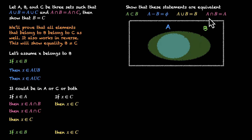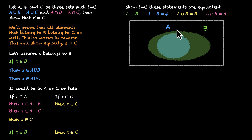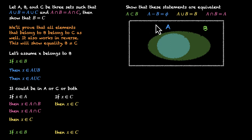The last statement says A intersection B equals A. If you take the area where A and B overlap, that's exactly the area of A. So A intersection B equals A. This same image takes us to each of the four statements, which means all four are equivalent.